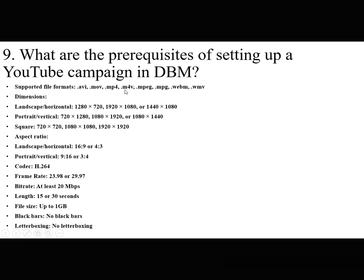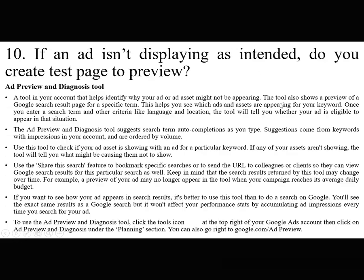What are the prerequisites for setting up a YouTube campaign in DBM? Supported file formats: AVI, MOV, MP4, MPEG, MPV, MPA. Dimensions — landscape/horizontal: 1280x720, 1920x1080, 1440x1080; portrait/vertical; square shape. Additional considerations include aspect ratio, codec, frame rate, bit rate, length, file size, and black bars or letterboxing. These are the key principles for setting up a YouTube campaign in DBM.